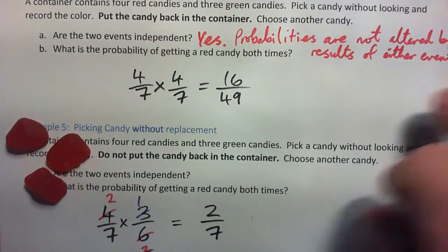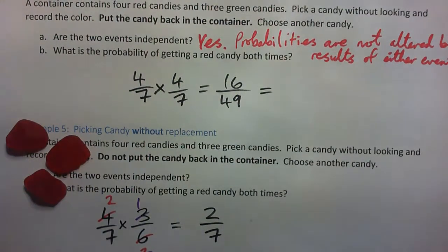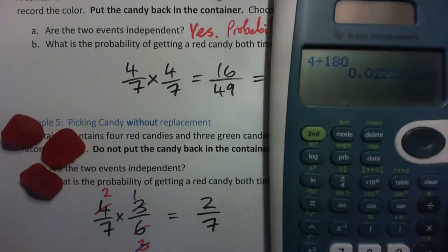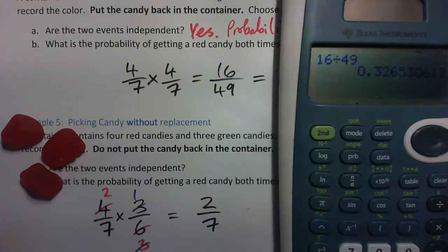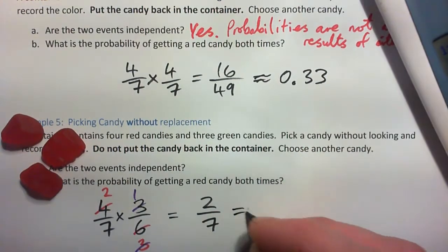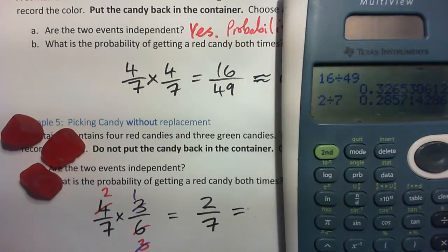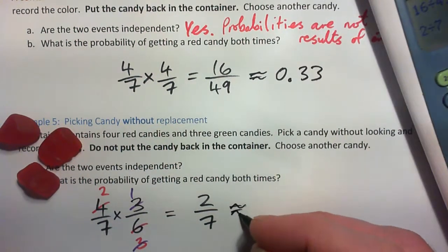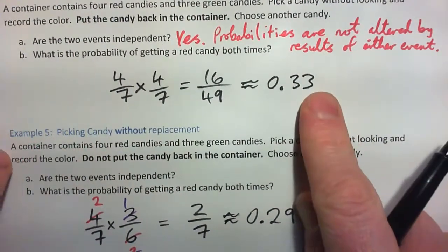So with replacement it was 16/49, which is about 0.33. Without replacement it's 2/7, which is about 0.29. So replacing it gives a different result than not replacing it. Agreed?